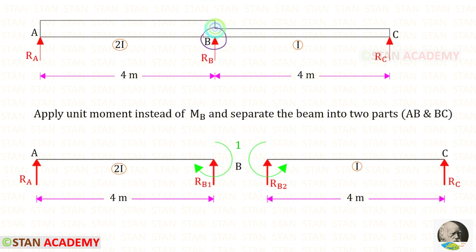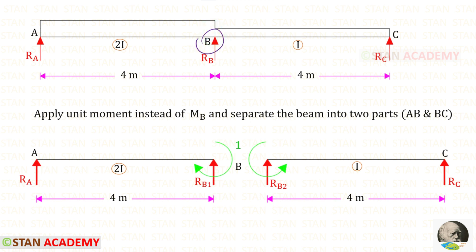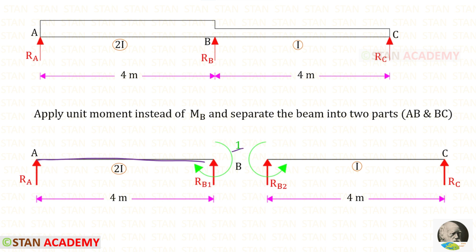From point B, we have to remove MB and instead apply a unit moment. Then from point B, we have to split the beam into two different simply supported beams: AB and BC. In beam AB, let us keep the unit moment in the clockwise direction, and for beam BC, let us keep it in the anticlockwise direction.